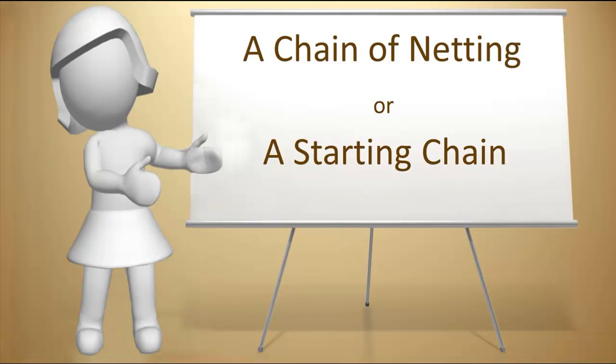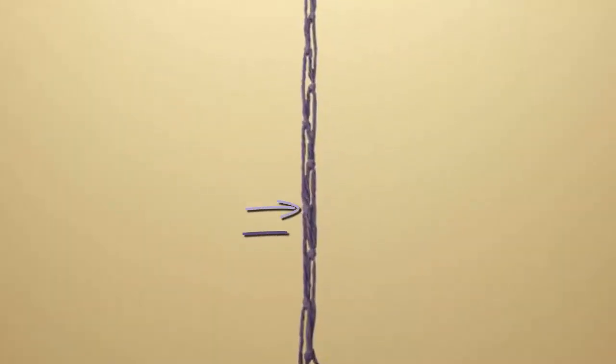A chain of netting, or a starting chain, looks like a single column of netting with one knot followed by one loop, followed by one knot, followed by one loop until the chain ends.